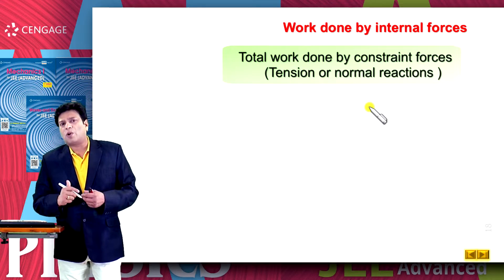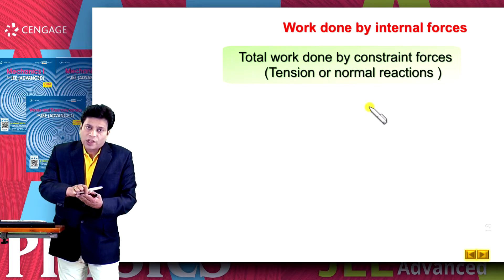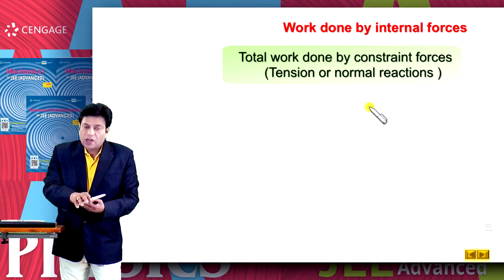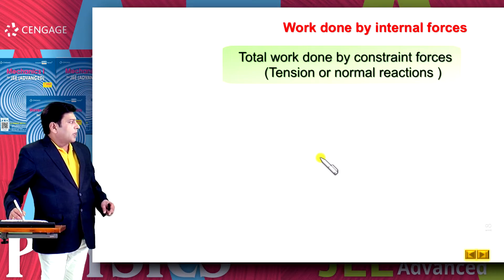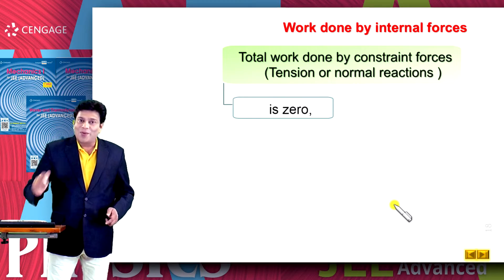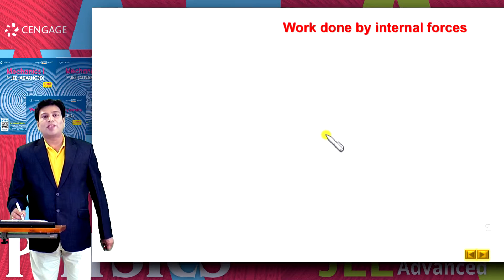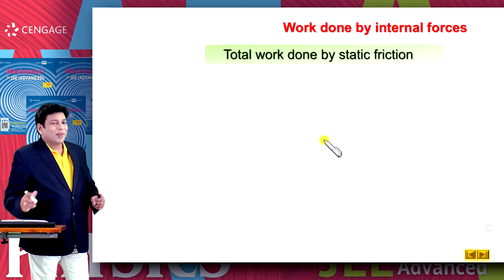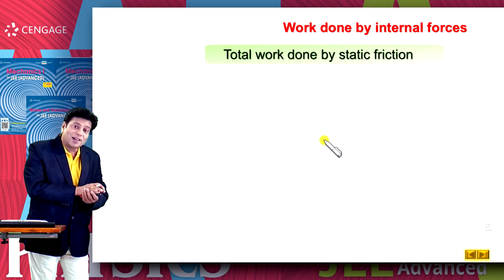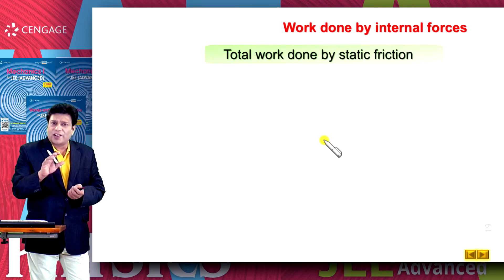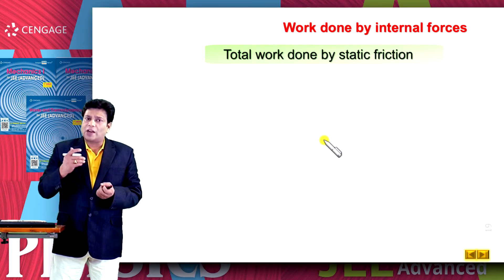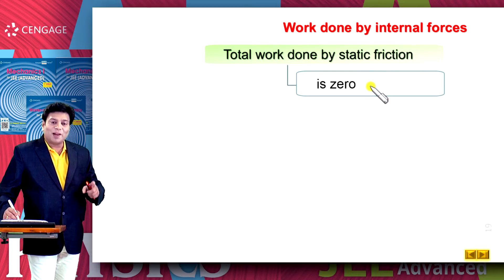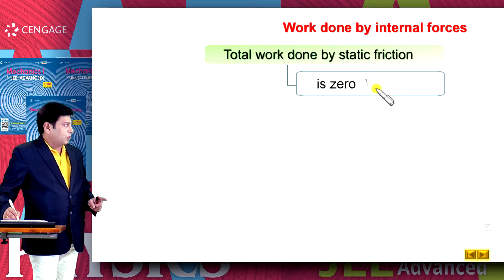Now let us discuss the normal reaction. Suppose two bodies are in contact with each other. If the contact is not losing, then work done by the normal reaction on the system should also be zero. That means the total work done by the constraint forces should be zero. Now let us come to the friction force. In friction force, first we will discuss static friction. In the case of static friction, there is no relative sliding. So the net work done on the system by the static friction should be equal to zero.